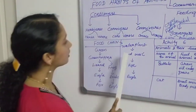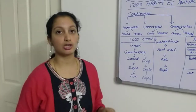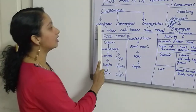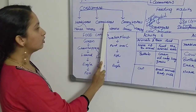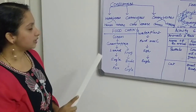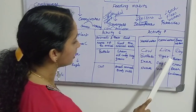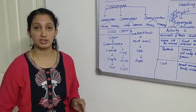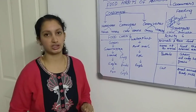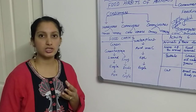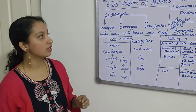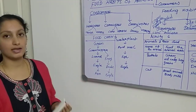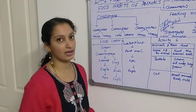Moving to the next one: carnivorous, from 'caro varere', meaning flesh or meat eaters. Carnivorous animals eat herbivorous animals. Examples are lion, tiger, eagle, and wolf. Carnivorous animals also have special types of teeth — long and pointed teeth for tearing the flesh. In the case of the eagle, it has a strong beak for tearing flesh.